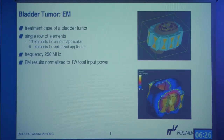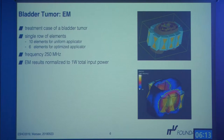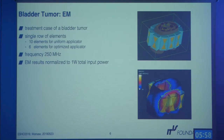We perform a comparison between a full array and an optimized array using a bladder tumor in the anatomical Duke model. The full array has 10 bow-tie antennas with individual water boluses; in the optimized case, the identified optimal placement area reduces the total element count to six. We use a frequency of 200 MHz, and EM results are normalized to 1 watt total input power for the full applicator.